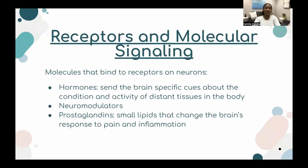Finally, we'll talk about receptors and molecular signaling in the brain. Neurons have receptors where molecules can bind. These molecules include hormones, which send specific cues about the activity of distant tissues in the body; neuromodulators, substances that indirectly excite or inhibit neuron firing; and prostaglandins, small lipids that change the brain's response to pain and inflammation.